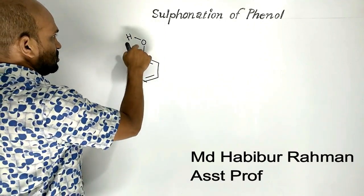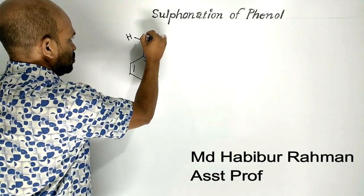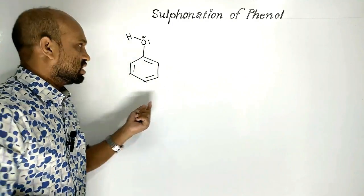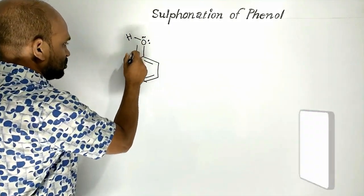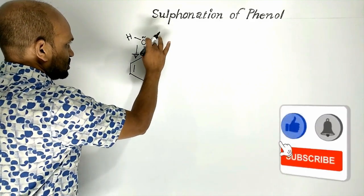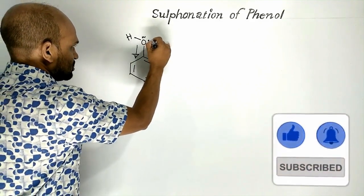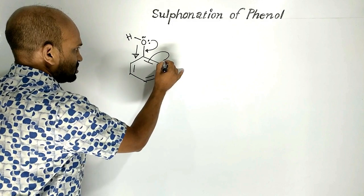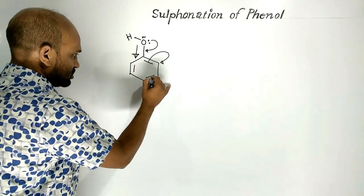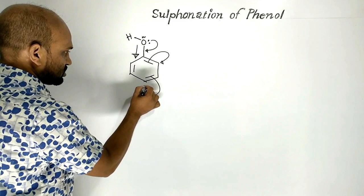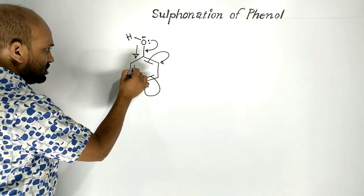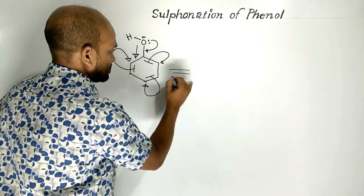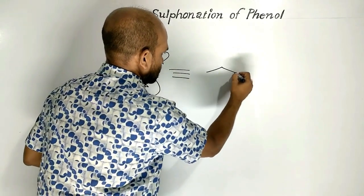This is phenol. Oxygen carries two lone pairs of electrons. The hydroxyl group is a kind of electron-donating group. As a result, this lone pair of electrons of oxygen turns into a bond pair. This bond pair of electrons turns into a lone pair, and similarly, this bond pair of electrons also turns into a lone pair. As a result, we see this compound.